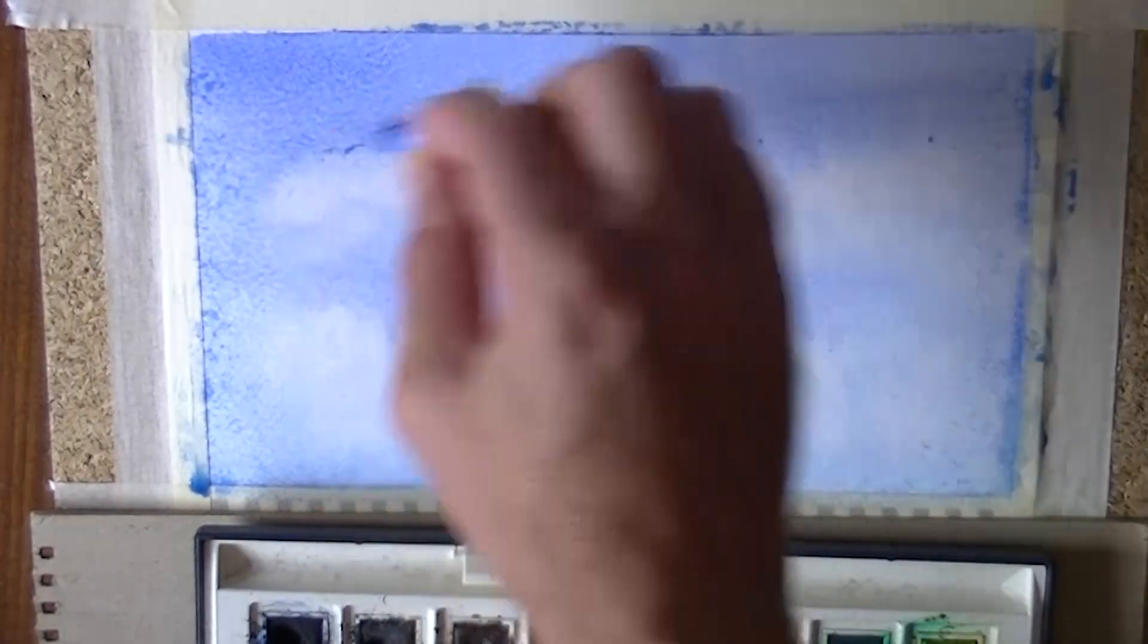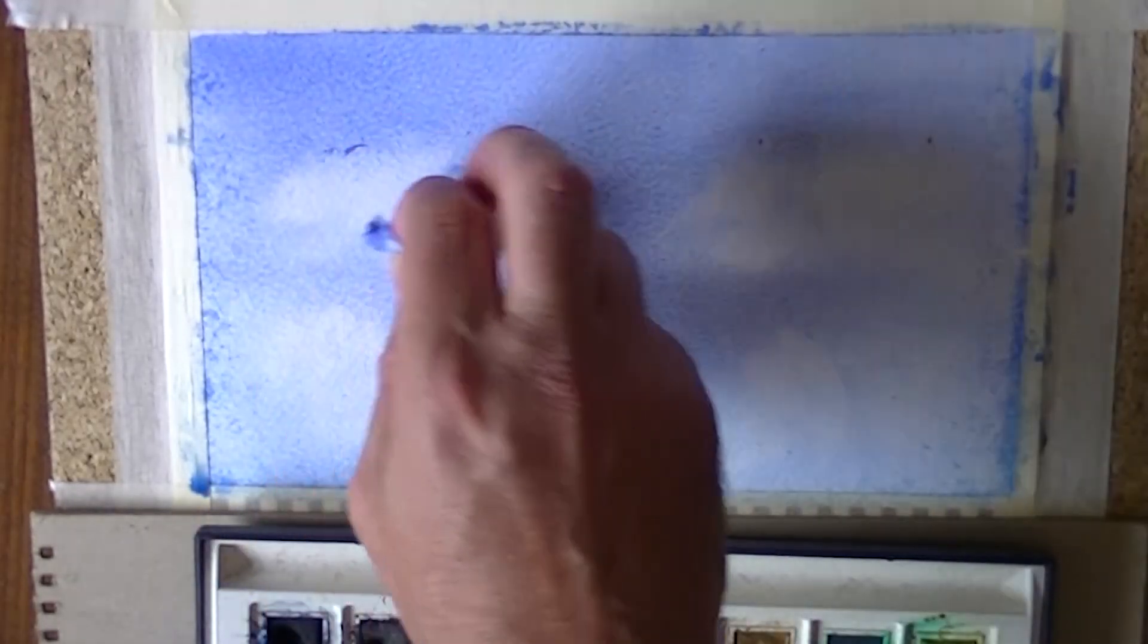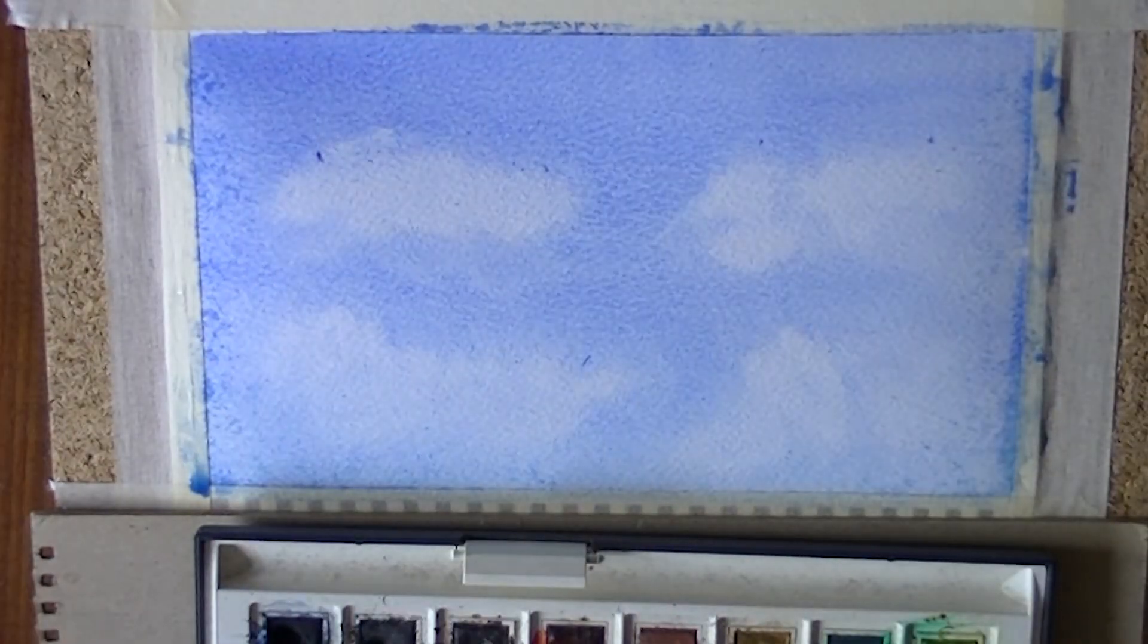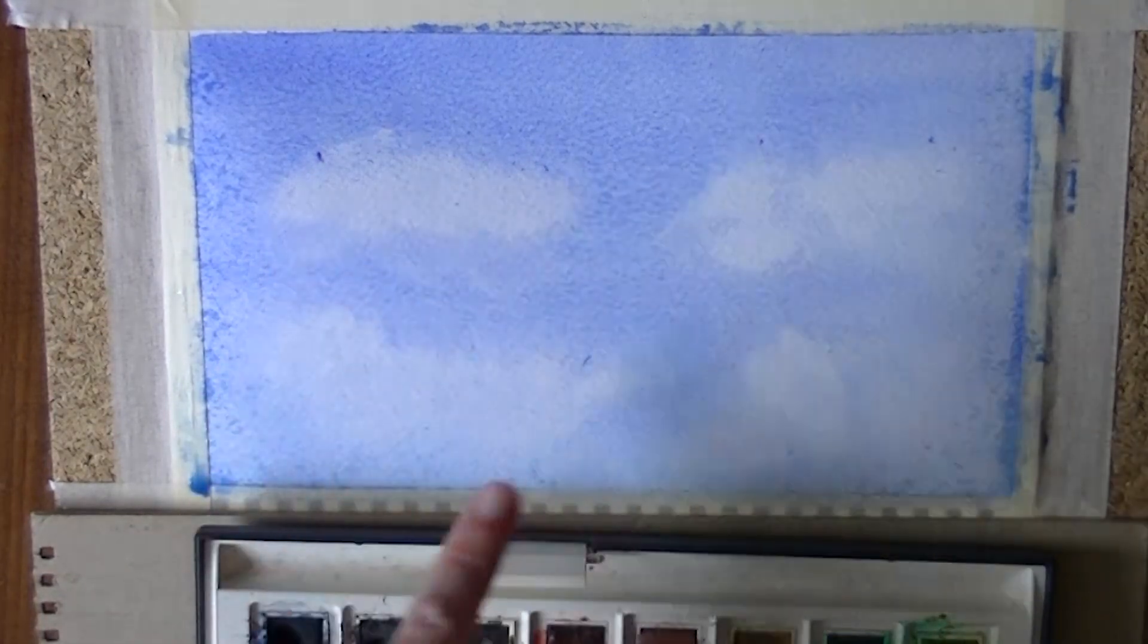So if you want to, just add a bit more. There you go. And then underneath the cloud, you've got this where you've used the brush to take some of the paint away. You've got a slightly darker edge and that just gives the cloud a bit of contrast in there as well.